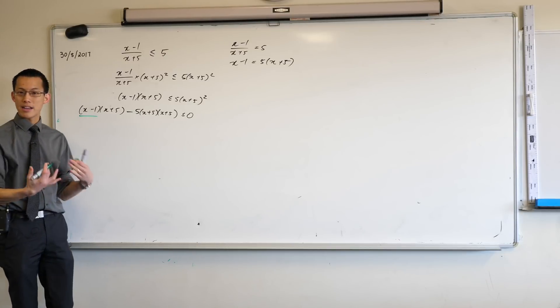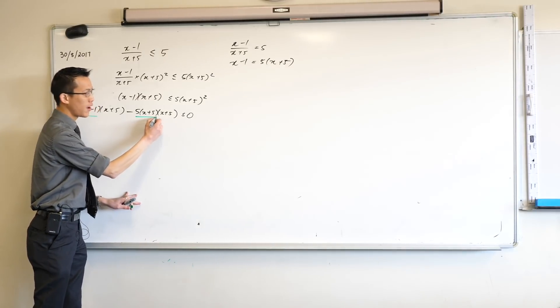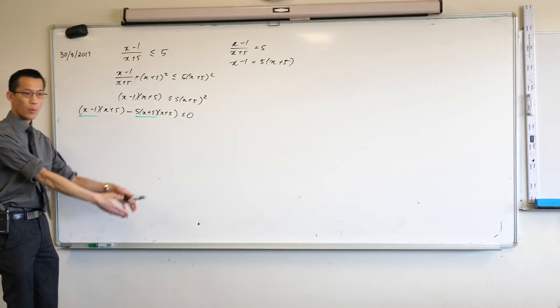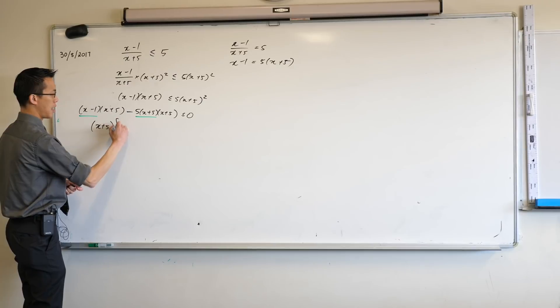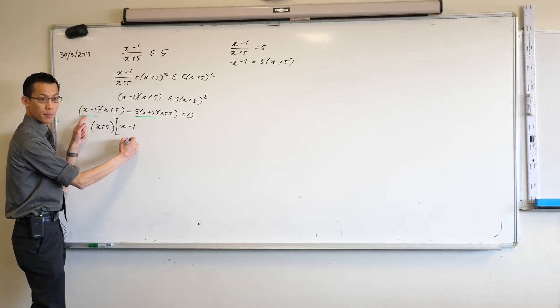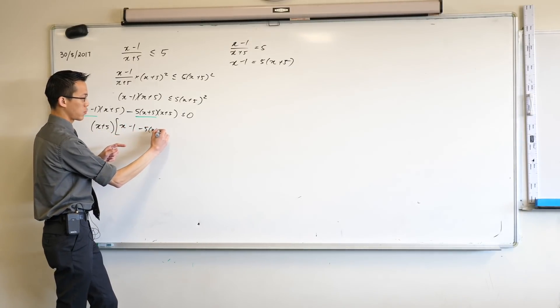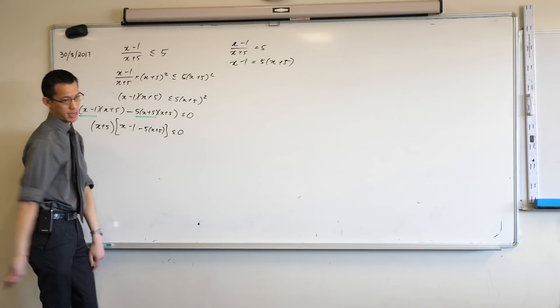I've got x minus 1 of these objects over here. So therefore when I take out the factor of x plus 5, what I land with is x minus 1 from here and 5 lots of x plus 5 over here. Is that okay? So that's less than or equal to 0.